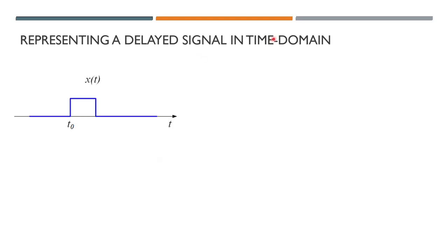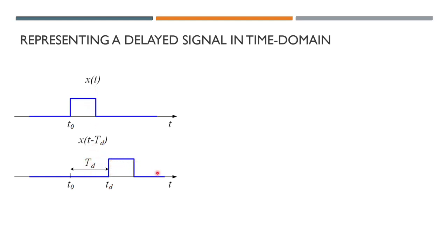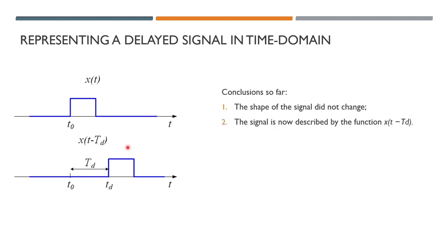Starting with representing a delayed signal in the time domain: let's take a pulse signal described by the function x(t) as an example. If the same signal is delayed by the time td, the shape of the signal doesn't change — the waveform is the same for both the original and delayed versions. The delayed signal is now described by the function x(t − td).